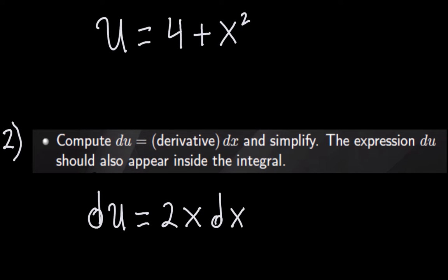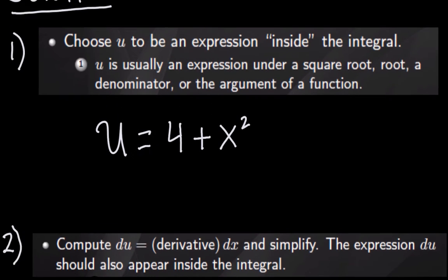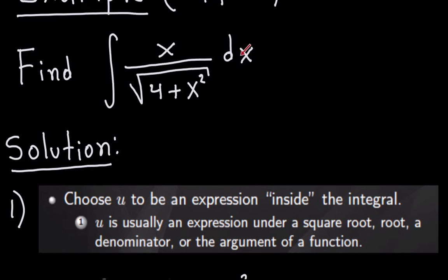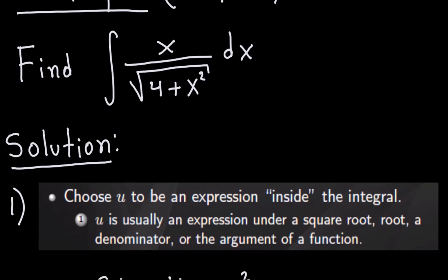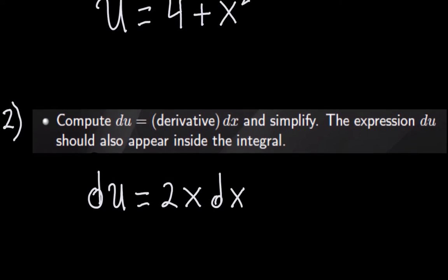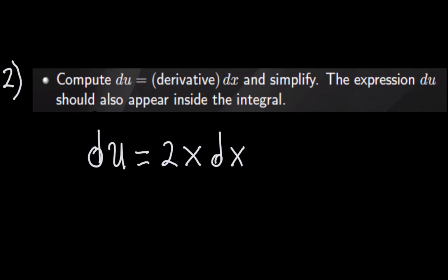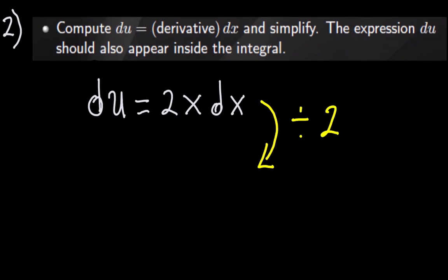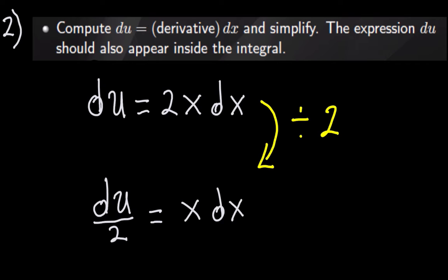As you notice, this 2x dx does not appear exactly in my integral — I only have x dx inside the integral. But we are off by a constant, and that's the purpose of this example. We can fix that really easily. I just have to divide by the constant that I'm off by, which is 2. So I'm going to divide by 2 on both sides, giving me du divided by 2 equals x dx. Now x dx appears exactly in my integral and is equal to du divided by 2.